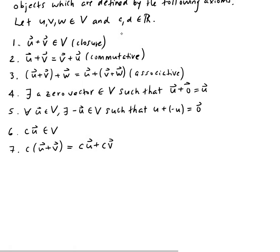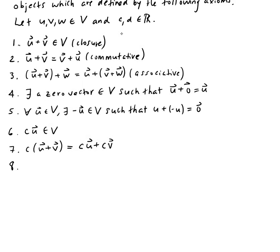Eighth, you have (c + d) times u, those are scalars times the vector u. This is the same as cu + du. That is the distribution property for vector u.